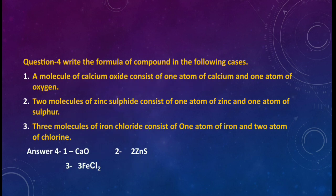Question number 4. Write the formula of compound in the following cases. Now you have to write the formula. Number 1. A molecule of calcium oxide consists of 1 atom of calcium and 1 atom of oxygen. How will you write? A molecule. A molecule means 1 molecule of calcium oxide. Calcium over here there will be 2 elements. Calcium and oxygen. Calcium symbol is Ca. Oxygen symbol is O. So the formula will become CaO. As you can see in answer 4.1. CaO. How CaO? Calcium. 1 molecule of calcium Ca and 1 molecule of oxygen O. So the molecular formula becomes CaO.